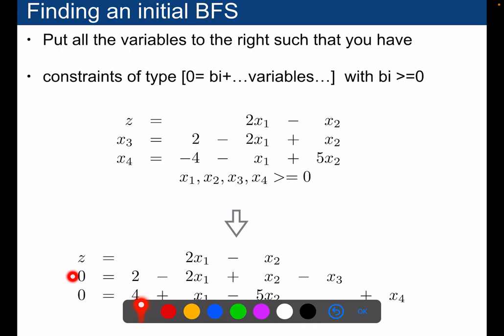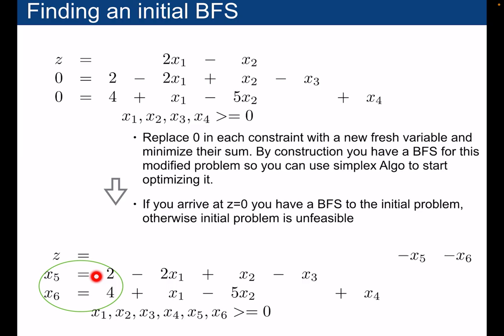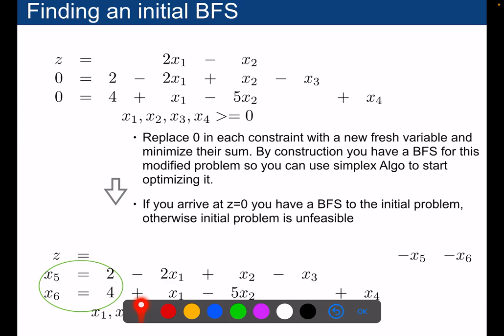Once you have that, you introduce one new variable to replace the 0 in each constraint — for instance x5 and x6. Ideally we would like x5 and x6 to take the value 0, because they replace what used to be 0 in the initial problem. This is why we want to minimize the sum of x5 and x6, which is equivalent to maximizing minus x5 minus x6. If we solve that problem to optimality, we will find a basic feasible solution.